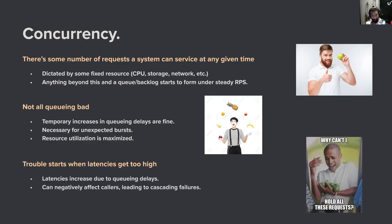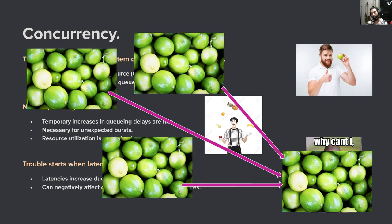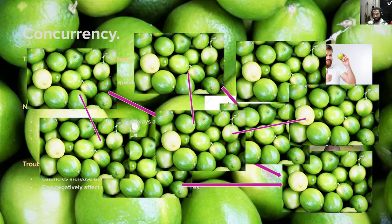Trouble starts to form when latencies get too high. The latencies increase due to queuing delays, and if a burst doesn't go away, it'll begin to negatively affect callers, leading to cascading failures. Your server gets inundated with requests, a queue forms, latencies increase, and all the callers to that service also start forming queues because they depend on it to service their own requests. Then the callers' callers queue up — next thing you know, everyone has queues, all latencies have increased, and it's timeout town. Comic book explosion.